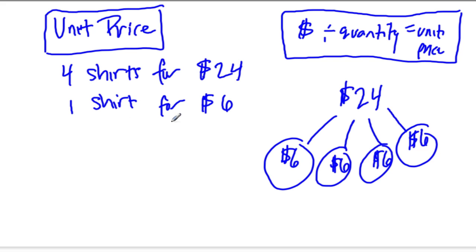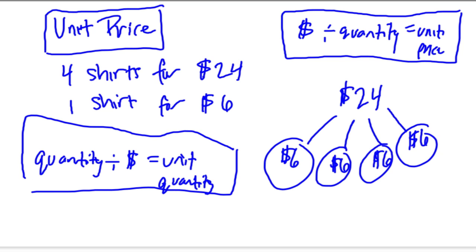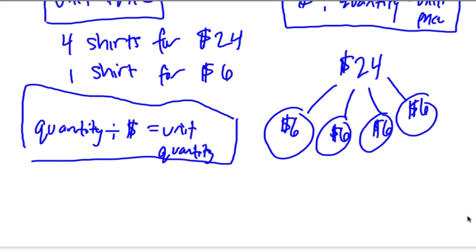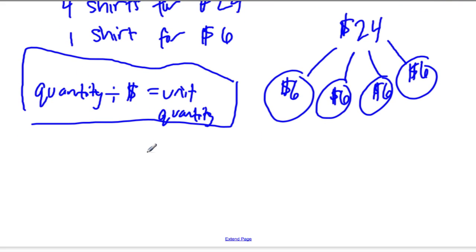Another way of thinking about this is to reverse it. What if you did the quantity you're buying divided by the price you're spending? This tells you the unit quantity, not the price. Unit quantity is something we don't often actually talk about, although I'm sure it's useful. It's not wrong to think about it, it's just sometimes a little bit more confusing.